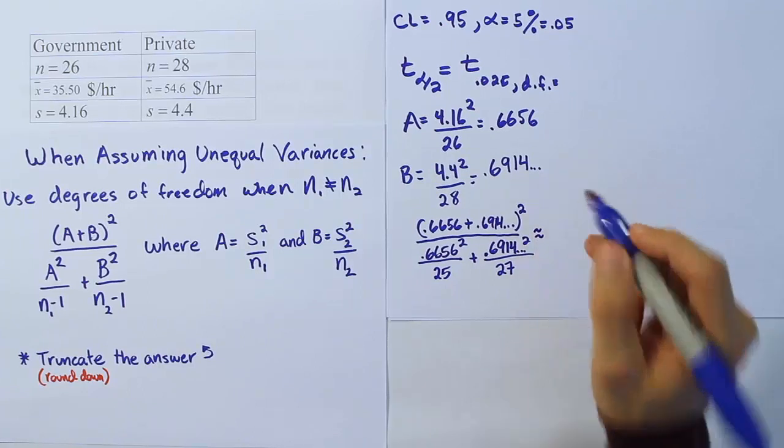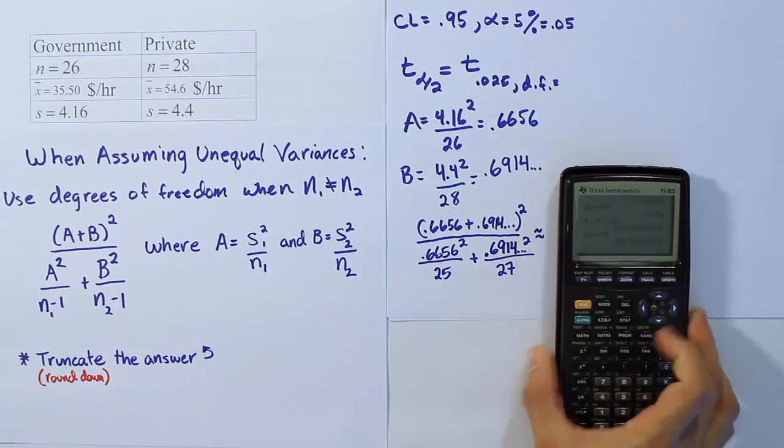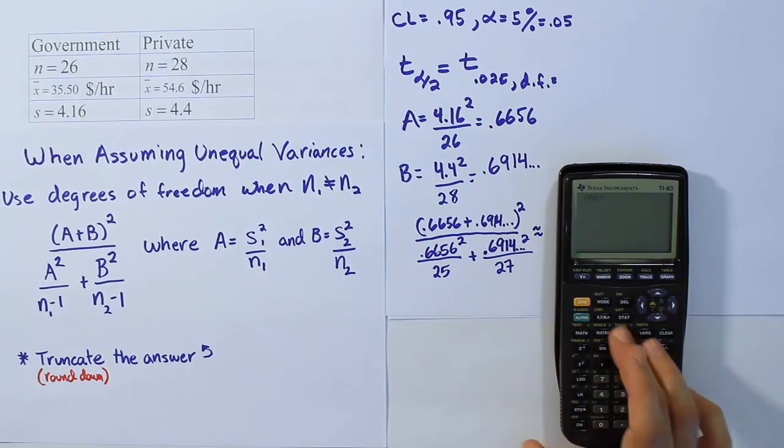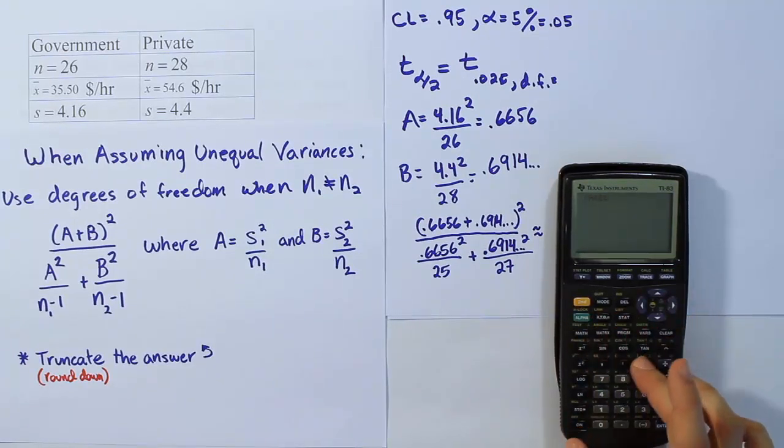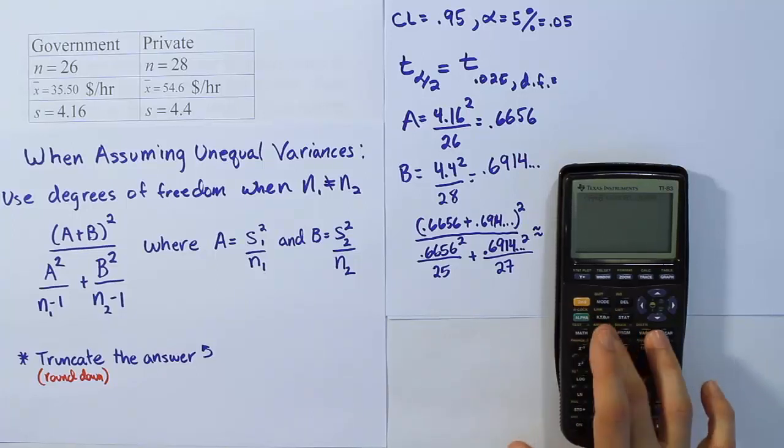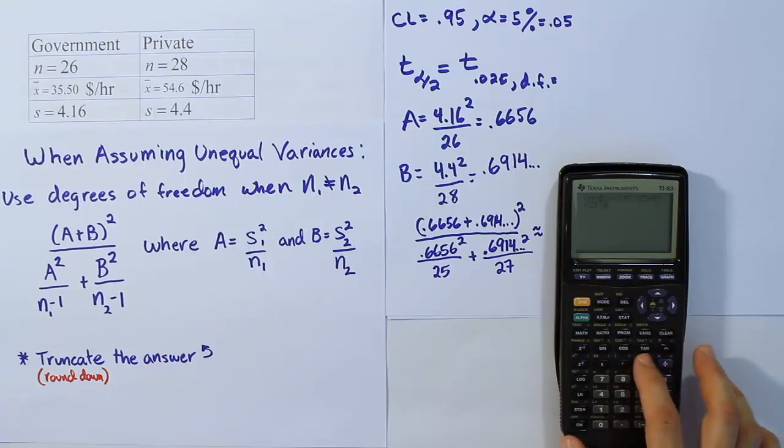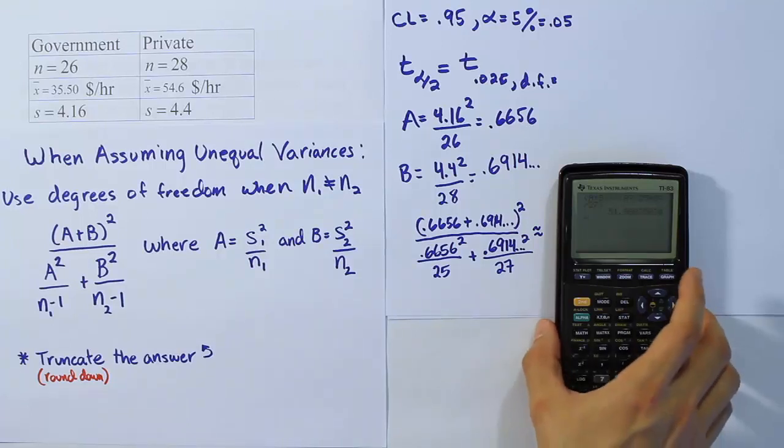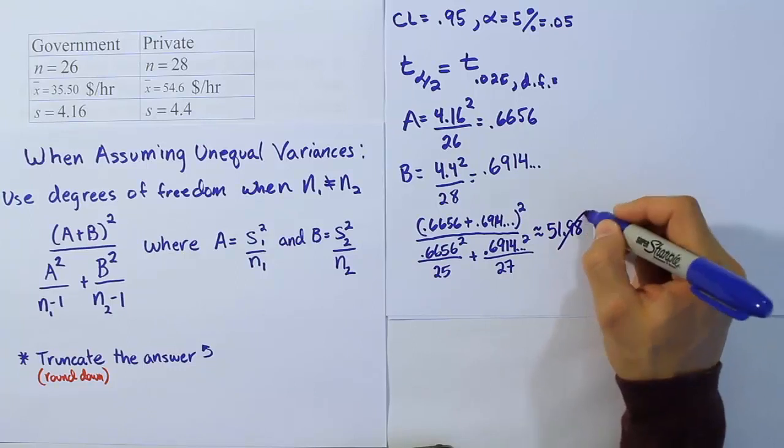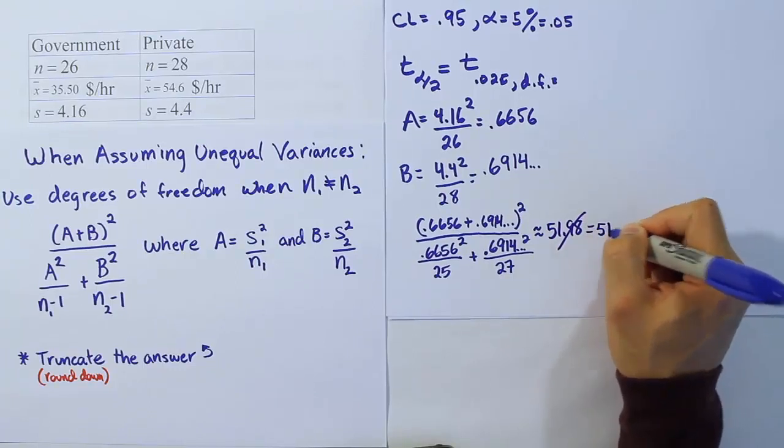Let's work this out. My calculator has it stored, so the A and B can be used directly. I'm doing A plus B squared, then dividing that by the denominator: A squared divided by 25 plus B squared divided by 27. Close the parenthesis and hit enter. We get 51.9803. Let's call it 51.98, and remember we're going to truncate it, so we drop that off and say the answer is 51. That's our solution.